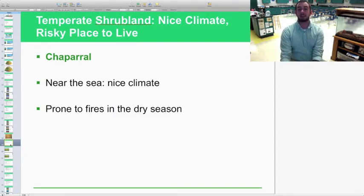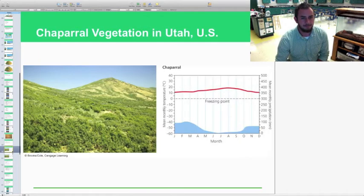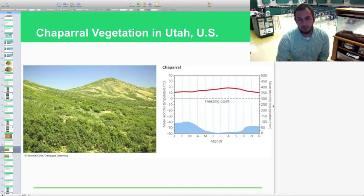Temperate shrublands, a nice climate, risky place to live though, like the chaparral. I showed you that picture in southern California. If you know California, they are very prone to fires. And you hear about fires, big wildfires happening in California all the time. And that is because they're near the sea, nice climate, but very dry. And they are very prone to fires in the dry season. That's usually where a lot of your forest fires occur. I really think that our climate, because we are so close to the coast, is more like a chaparral than it really is a temperate deciduous forest.